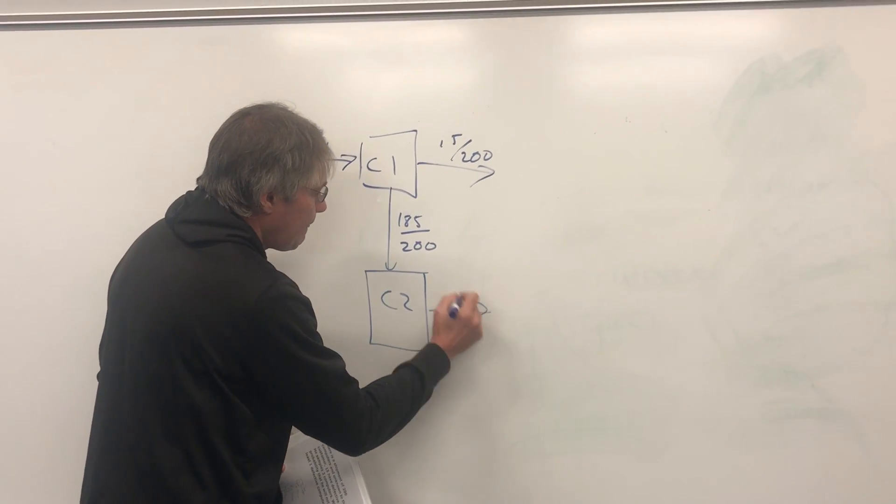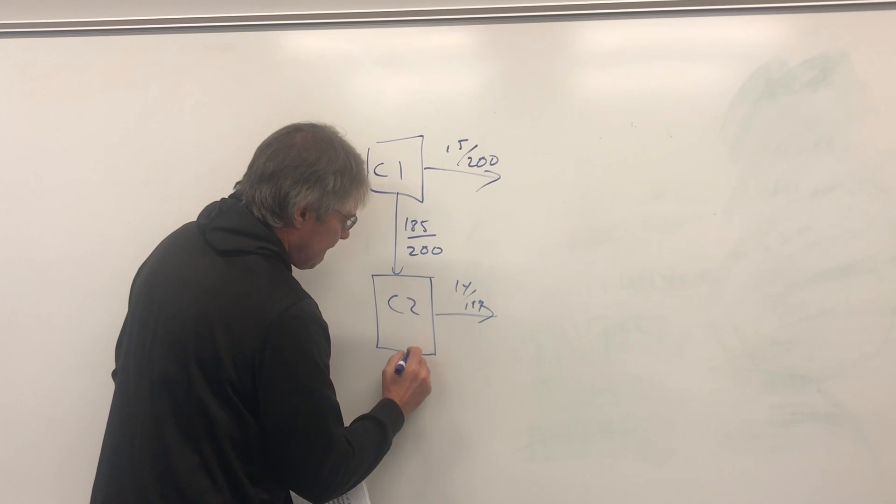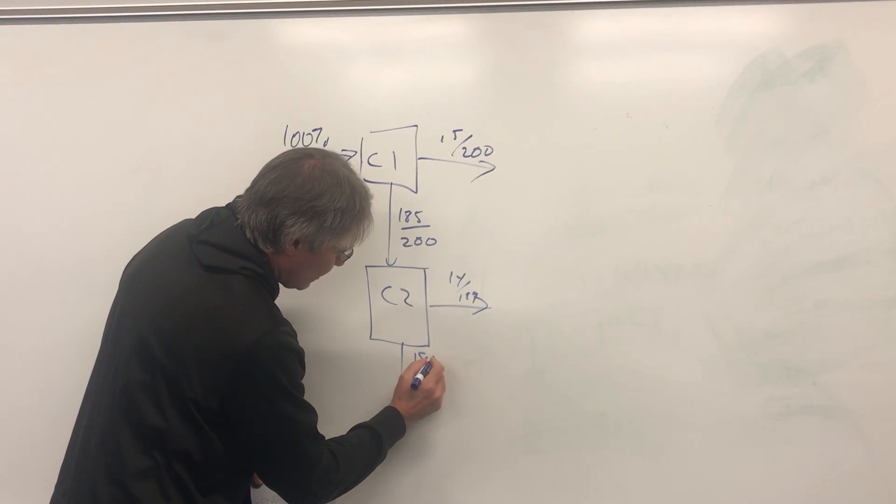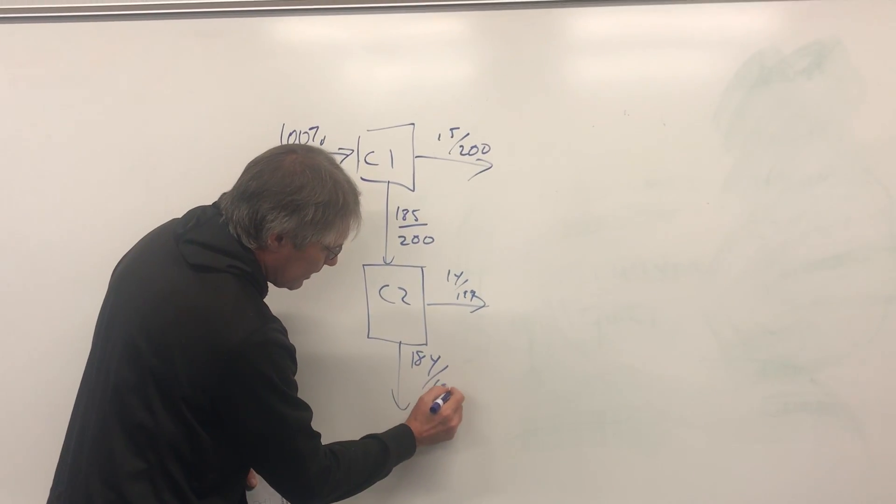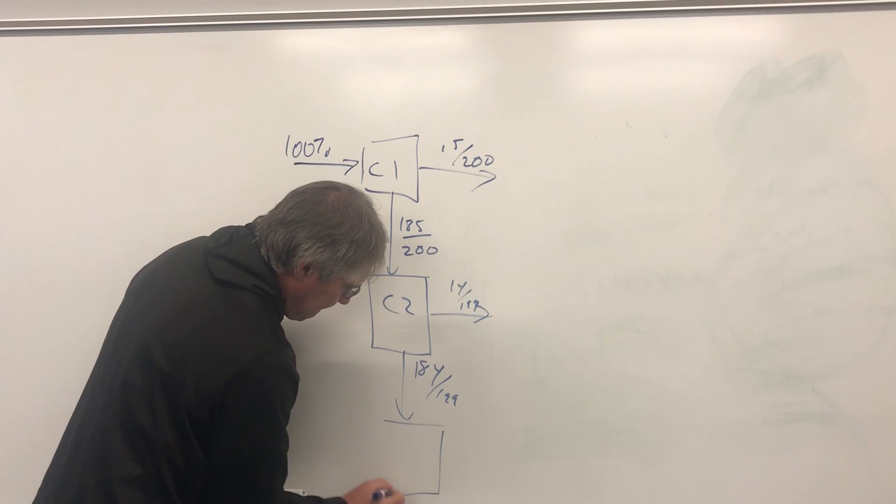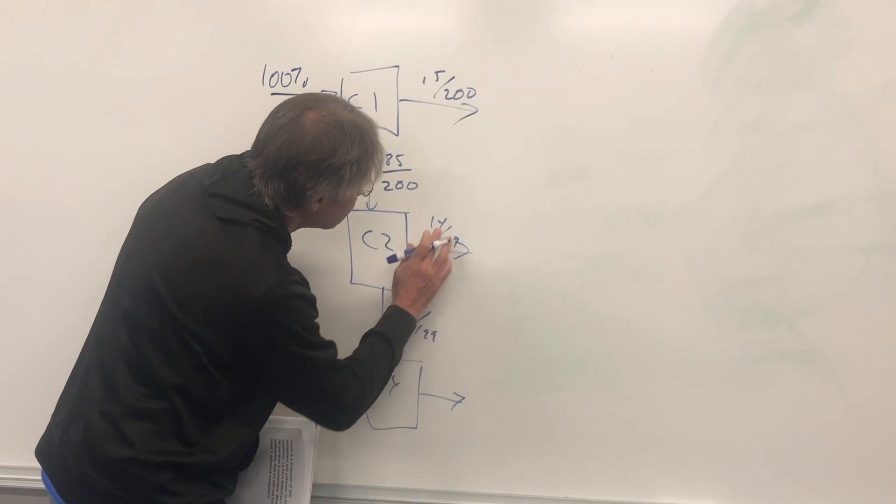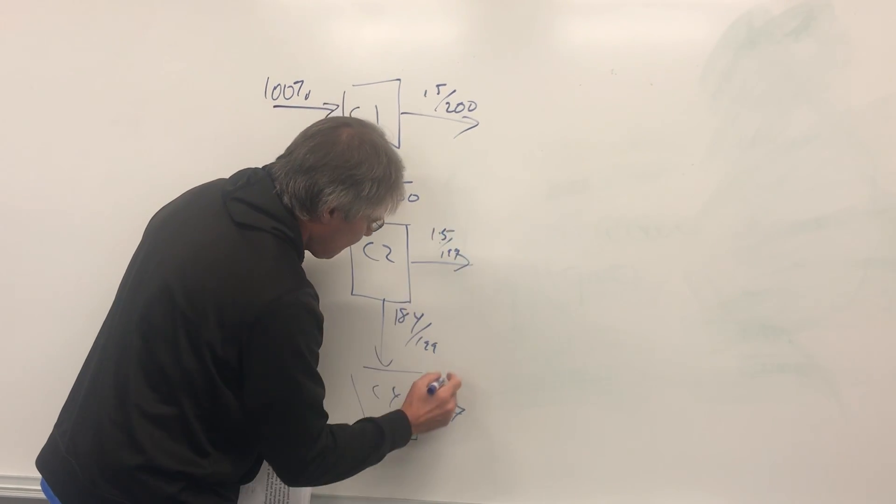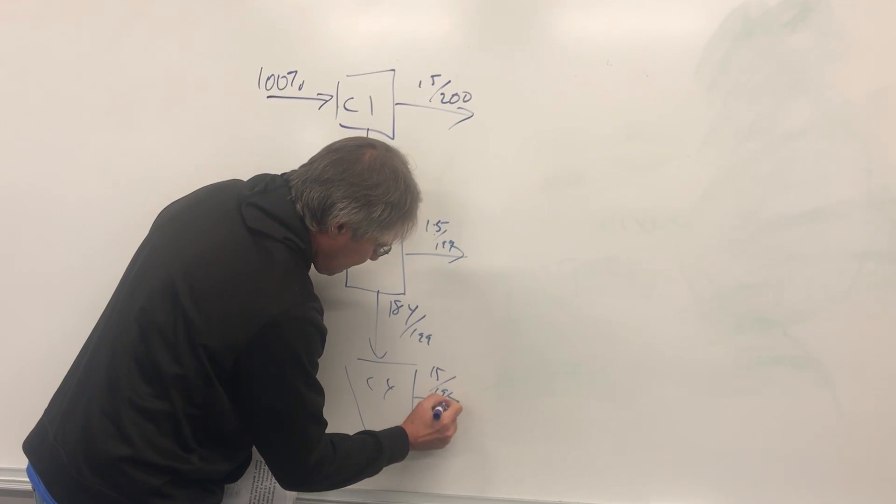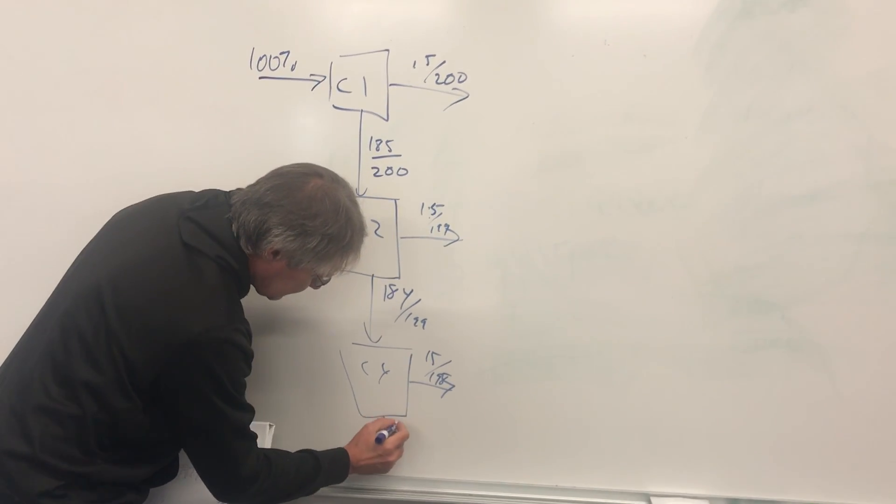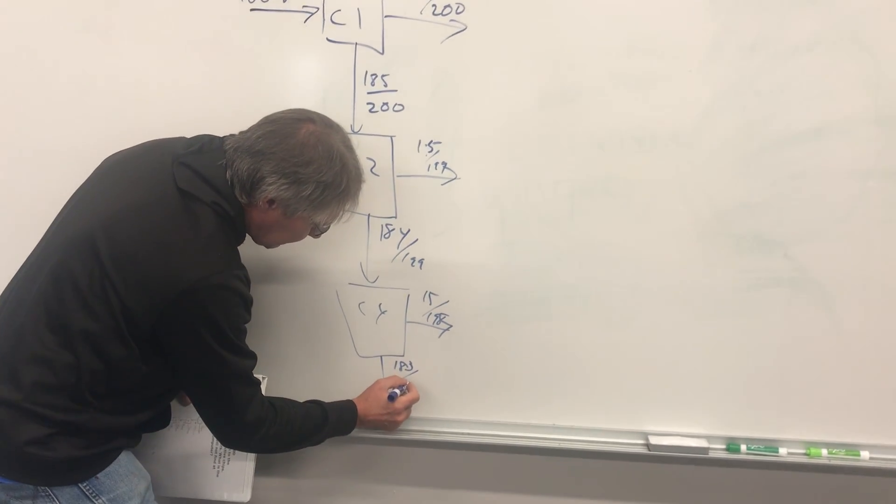Here's computer two. And at that time there's only 184 now, out of 199. Moving to computer three, there's 183 over 198.